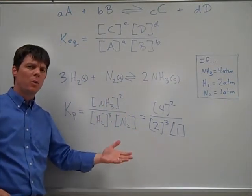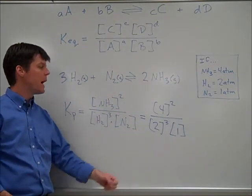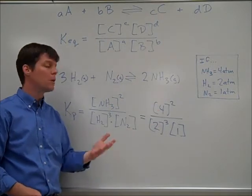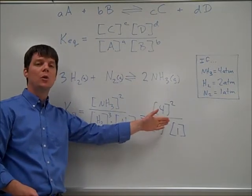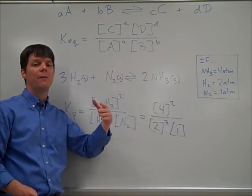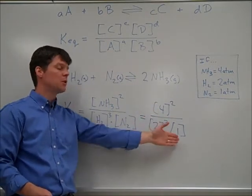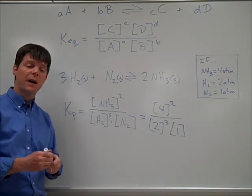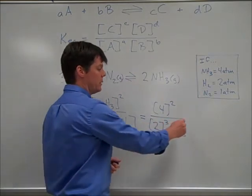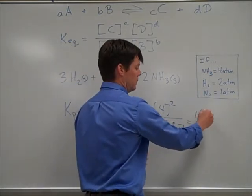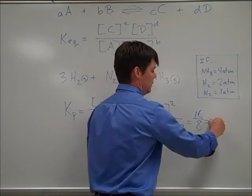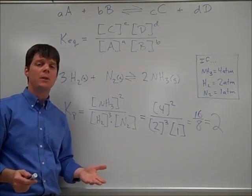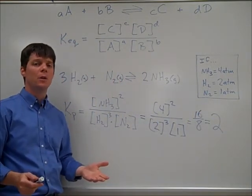Working through this mathematically: four squared gives us sixteen. Two cubed gives us eight, multiplied by one is still eight. So we have sixteen divided by eight, which simplifies to a value of two. We don't include units with these types of calculations.